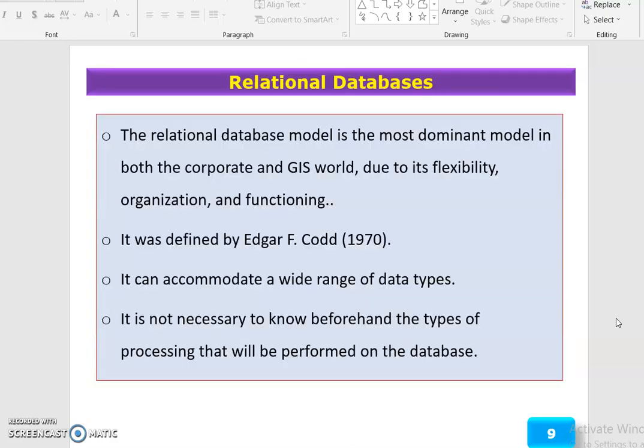The relational database model is the most dominant model in both the corporate and GIS world, due to its flexibility, organization, and function. It was defined by Edgar F. Codd in 1970. It can accommodate a wide range of data types. It is not necessary to know beforehand the types of processing that will be performed on the database.